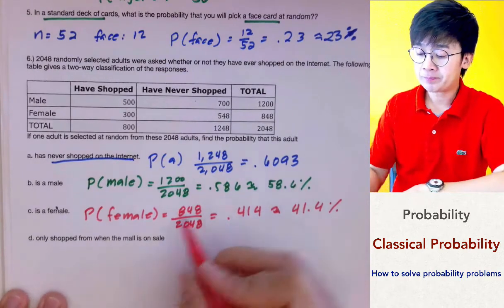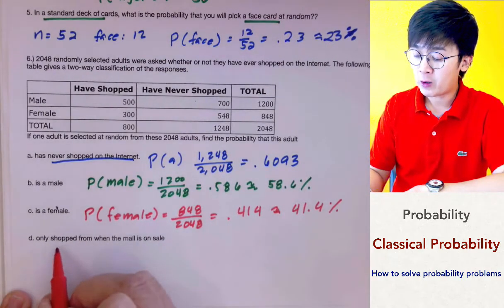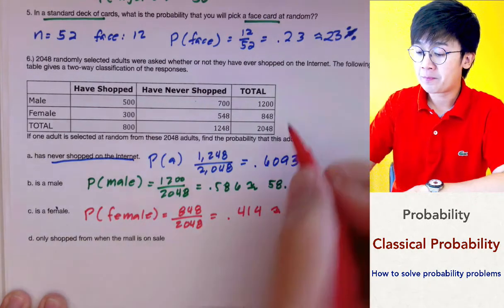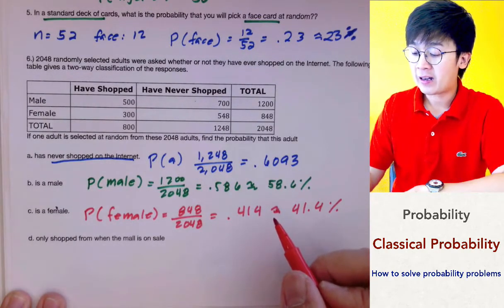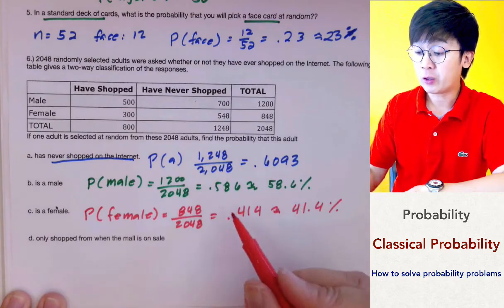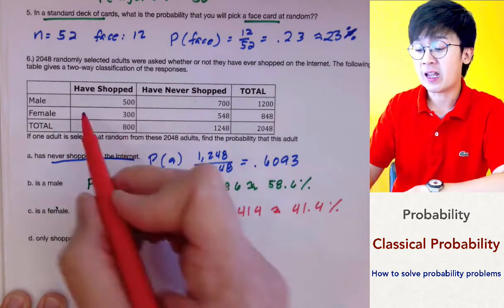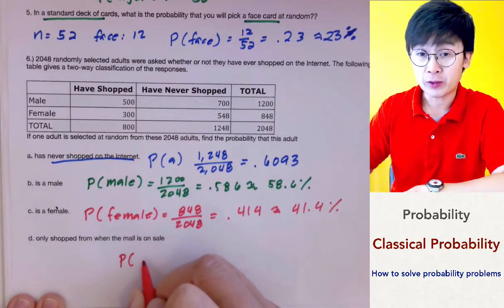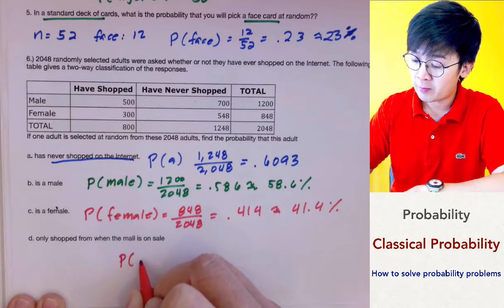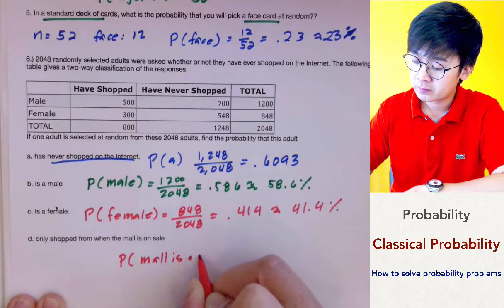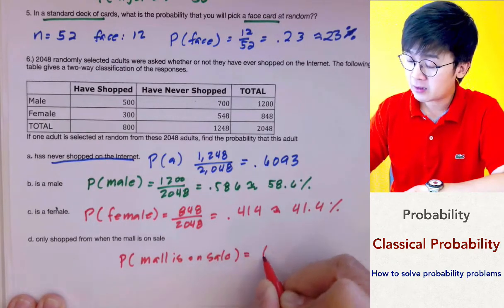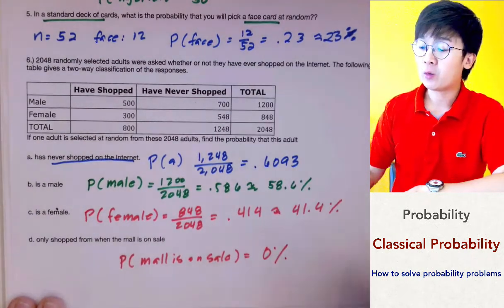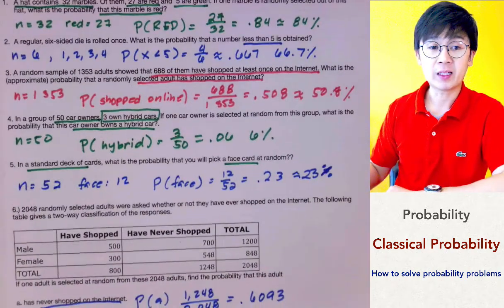For the last problem, we need to find the probability that a person only shopped when the mall is on sale. There is no information in this table that would give us a clue on how to find this probability because it was never asked in the survey. So the probability that a person selected only shopped when the mall is on sale is 0%, because it is not provided in our table. This is how we compute classical probability given the sample space.